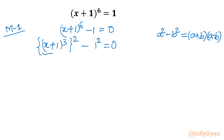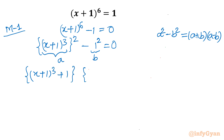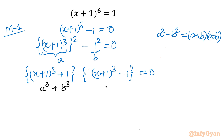Here I will consider a equal to x plus 1 whole cube and b equal to 1. Applying the difference of squares: the first bracket is x plus 1 whole cube plus 1, and the second bracket is x plus 1 whole cube minus 1, and that equals 0. Now another formula applies: sum of two cubes a cube plus b cube, and difference of two cubes a cube minus b cube. Let's apply.